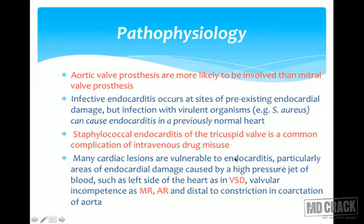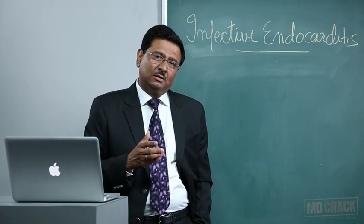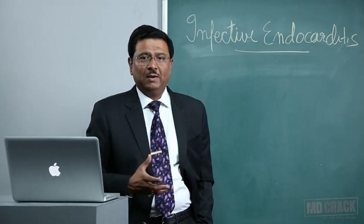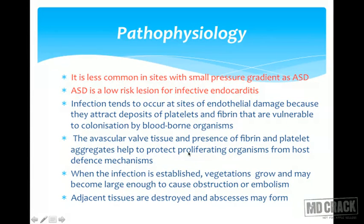Many cardiac lesions are vulnerable to endocarditis particularly areas of endocardial damage caused by a high-pressure jet of blood, such as in VSD, valvular incompetence like mitral regurgitation or aortic regurgitation, and importantly distal to constriction in coarctation of aorta. MCQs have been framed on all of these. It is less common in sites with small pressure gradient, such as atrial septal defect.